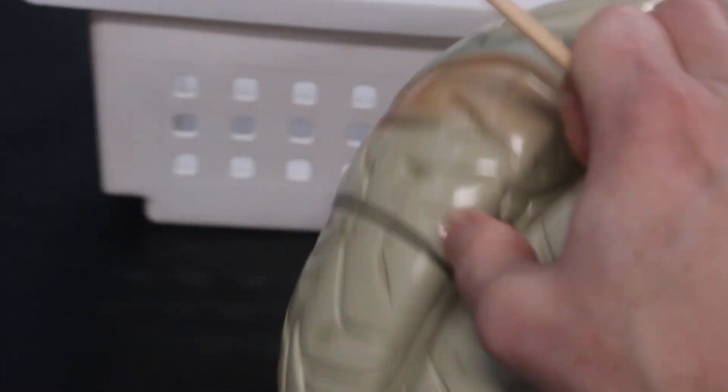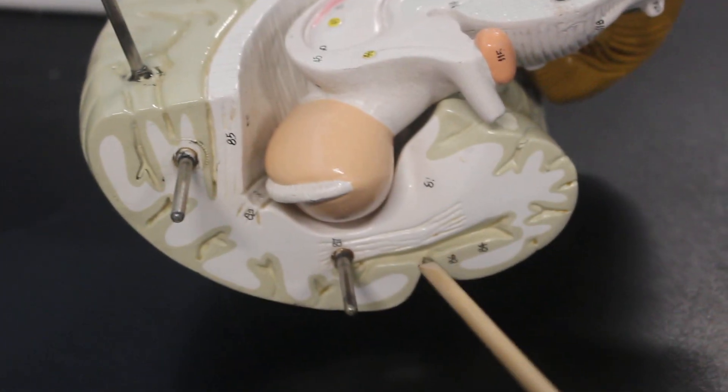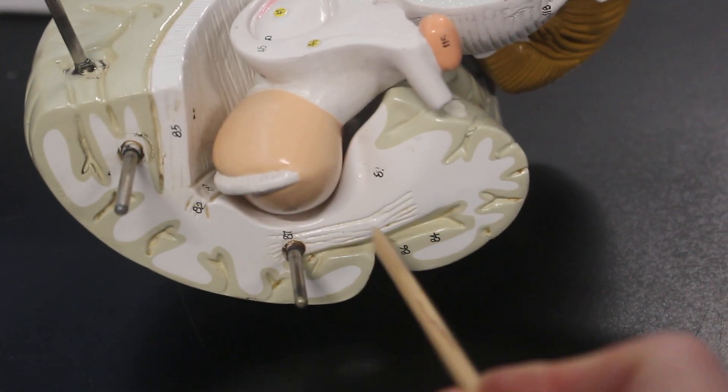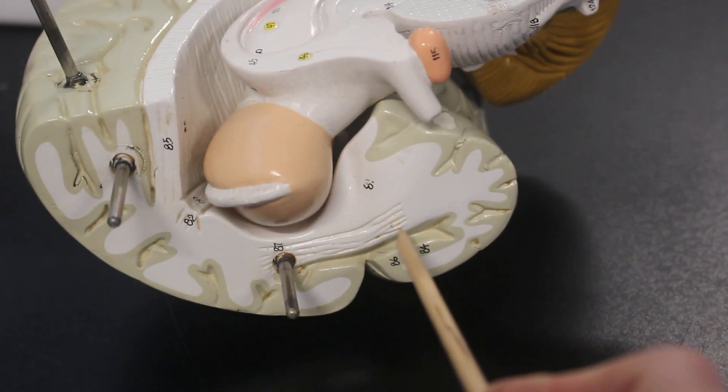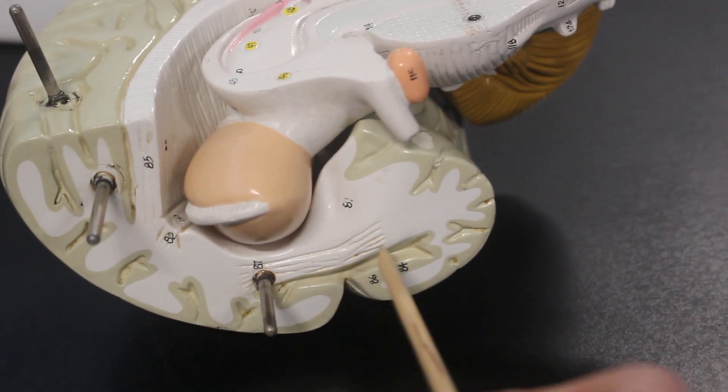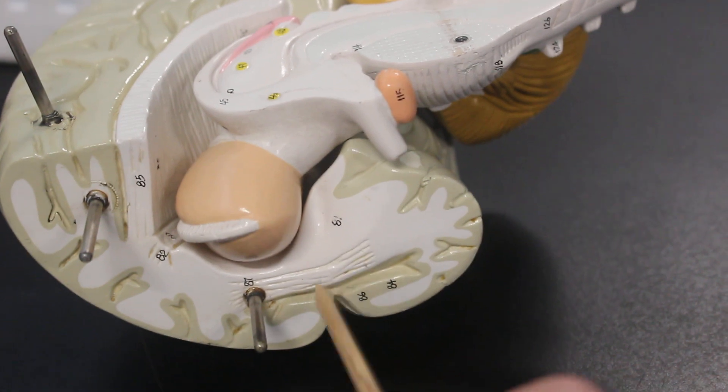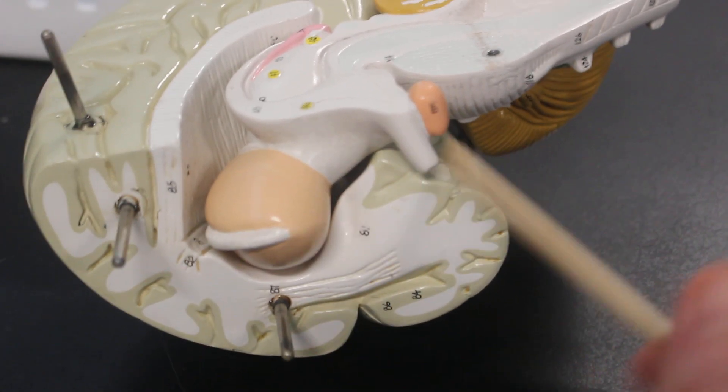Then, if we open this up, take this piece off. Right in this area here is the insula. So the fifth lobe of the cerebrum is the insula. It is found in here. That's the only time I would point here is for the insula.